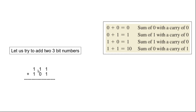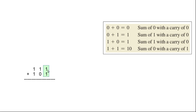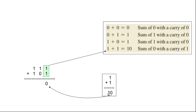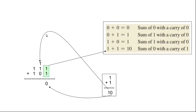In today's class, let us first try to add two 3-bit numbers. The two numbers are 111 and 101. Just like we perform addition of decimal numbers, here also when we add two numbers we will first start by adding the two least significant bits, which in our case is 1 and 1. When we add 1+1 we know it results in a sum of 0 and a carry of 1. The carry out of the first stage becomes the carry in to the second stage.